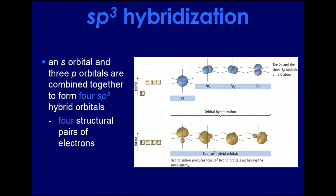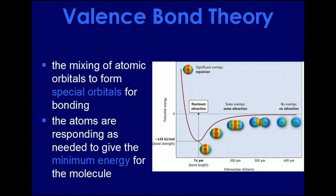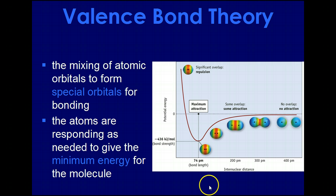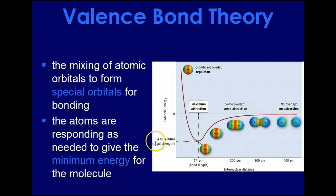Electrons have to overlap in order to form a bond. However, you don't want them so close together that they repel one another. This gives you an idea of how the distance between two atoms will cause some attraction, but if you get them too close you'll have repulsion, and if you don't get them close enough you won't have any attraction whatsoever. There is an energy minimum — this is giving off energy — which is why certain bonds form at certain lengths.